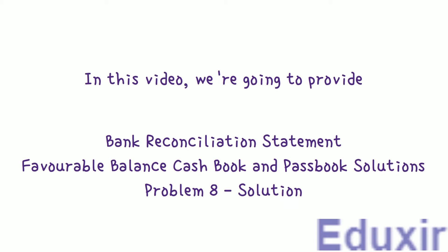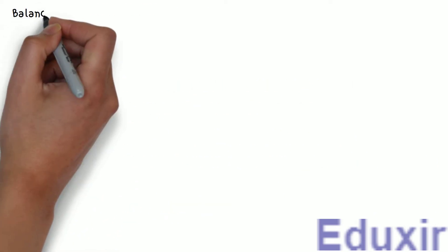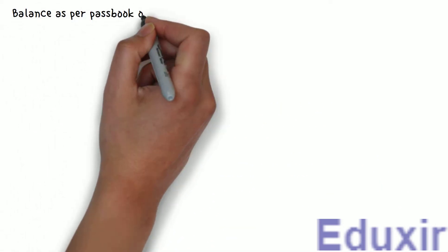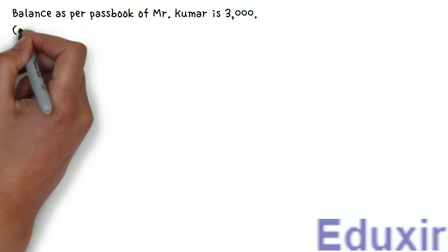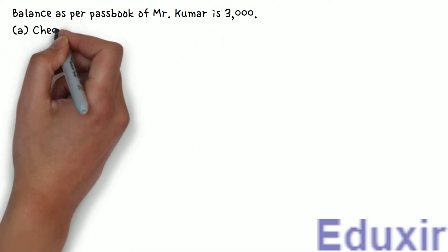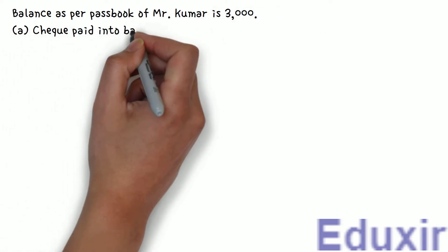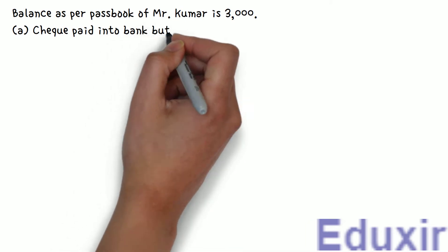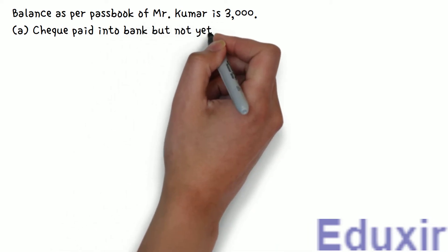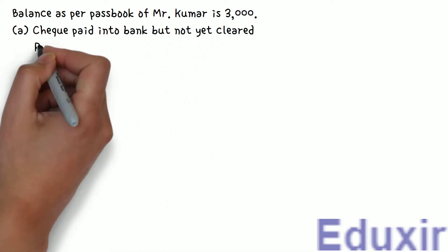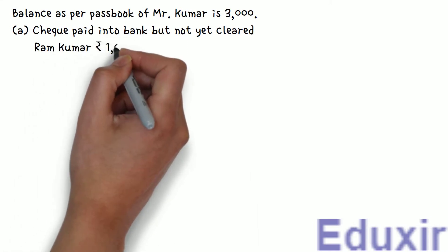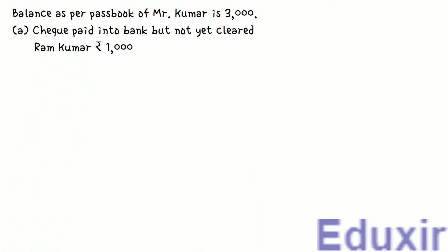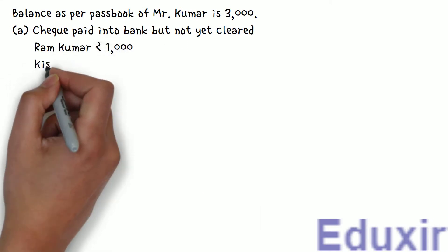The problem statement is as follows. Balance as per cashbook of Mr. Kumar is Rs. 3000. A: Check paid into bank but not yet cleared — Ramkumar Rs. 1000, Kishore Kumar Rs. 500.